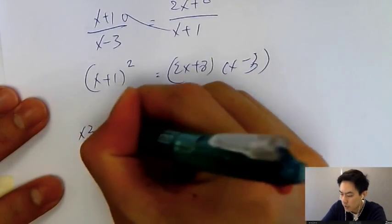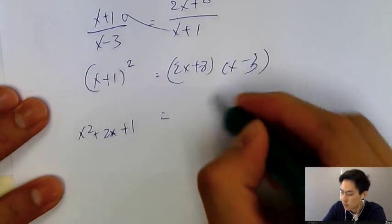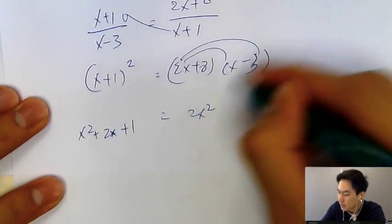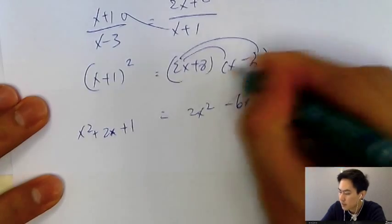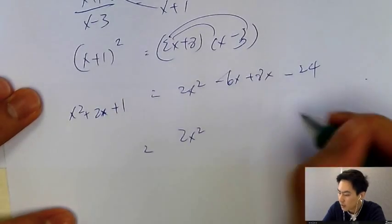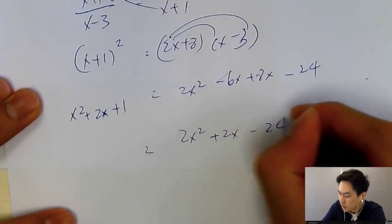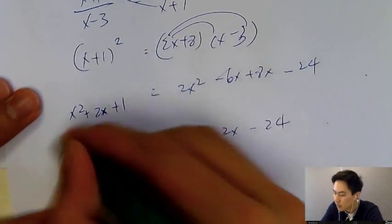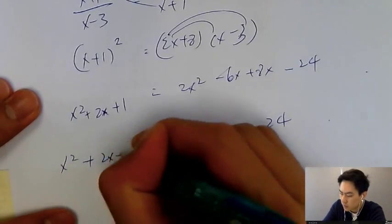Expand all the things. That will be x squared plus two x plus one. And this one is two x squared minus six x plus eight x minus twenty four. So you expand: two x squared plus two x minus twenty four.